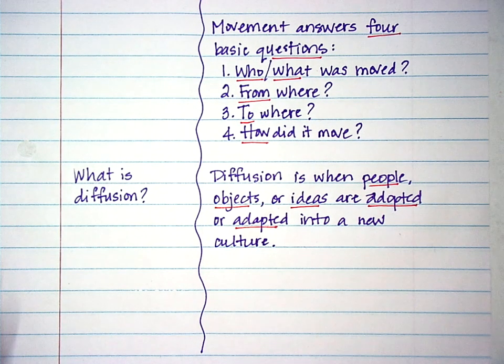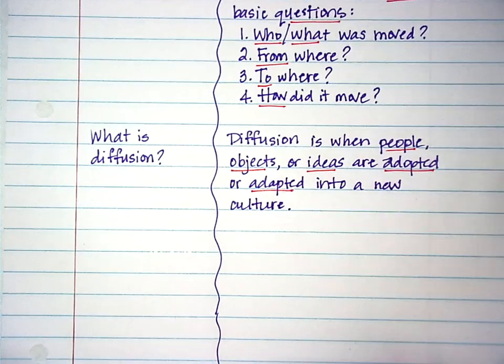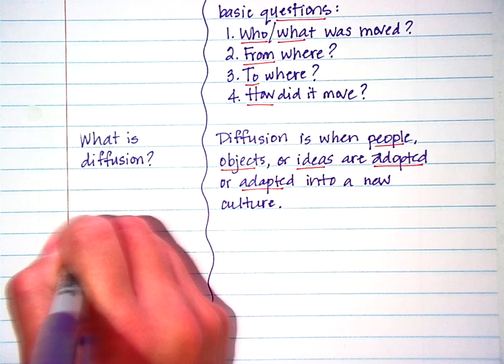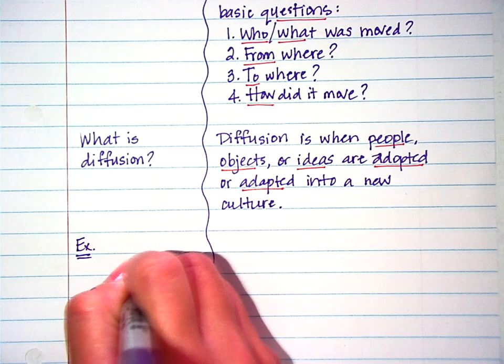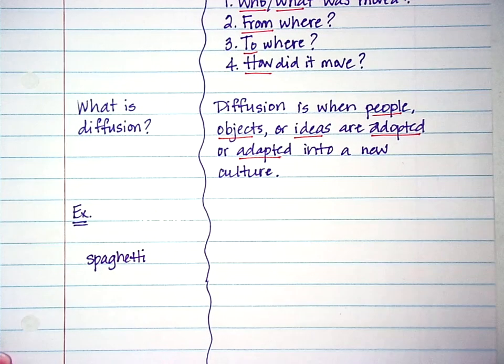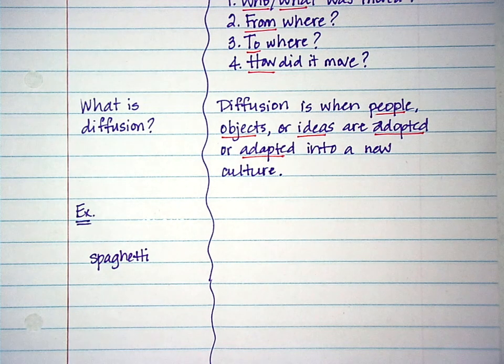So we're going to take an example that I'm sure quite a few of you are familiar with. So you need to draw along with me. Our example goes with spaghetti. And so in looking at the movement and diffusion of spaghetti, we need to identify who or what was moved from where to where and how. And the best way to represent movement is to draw a map.